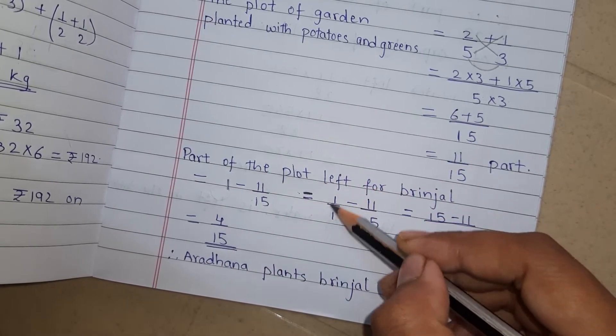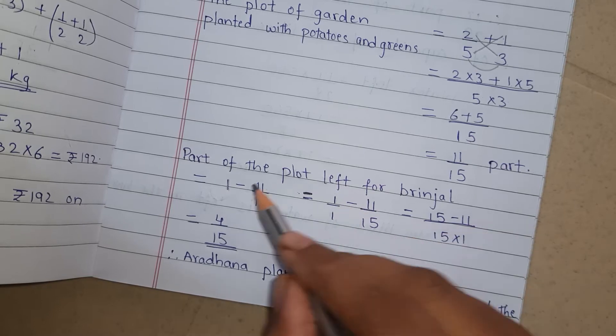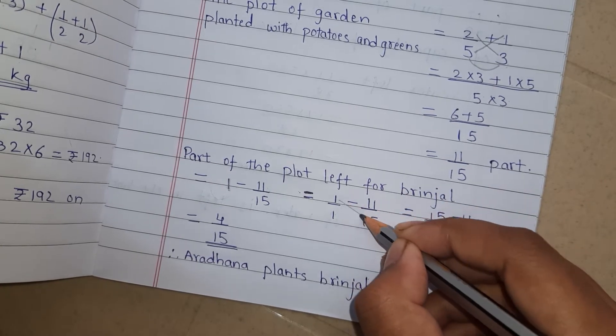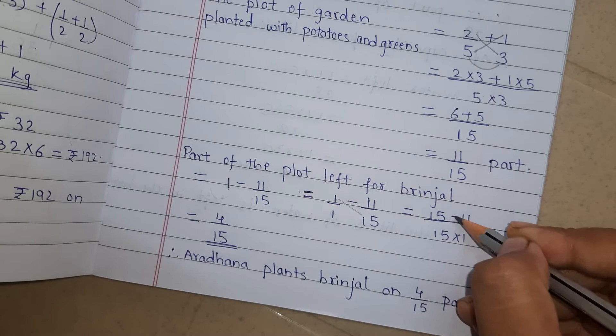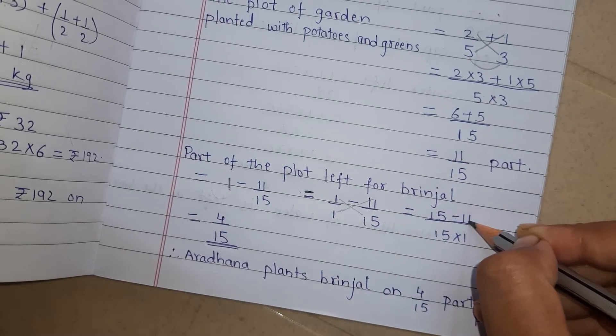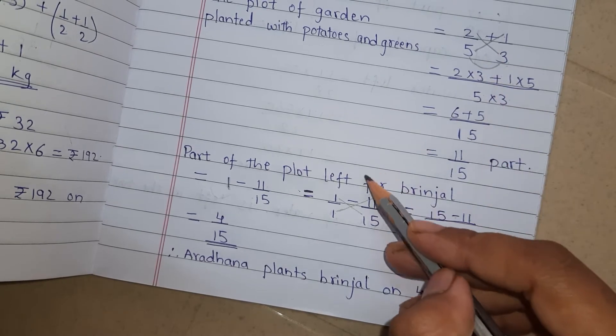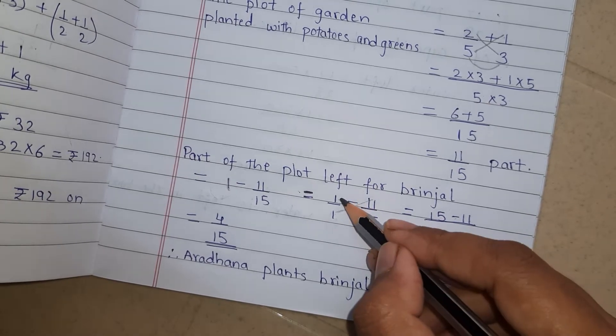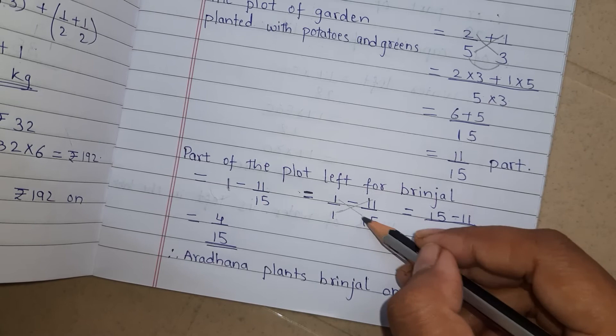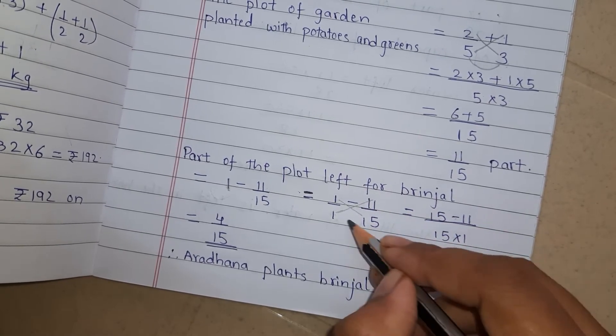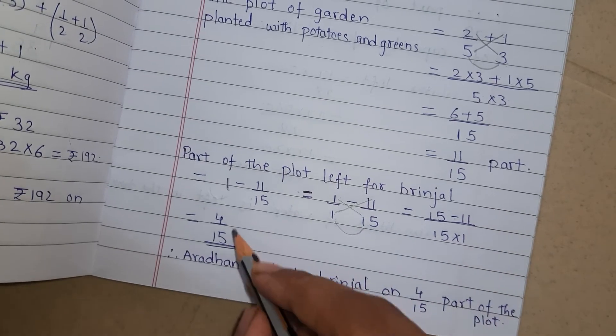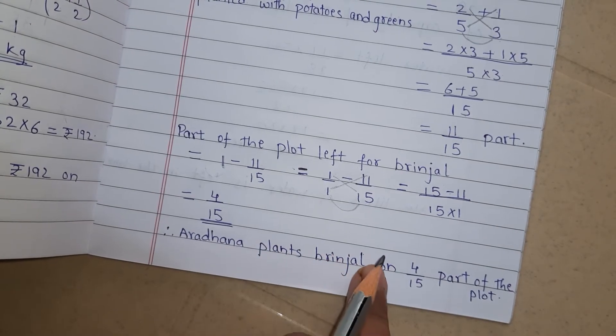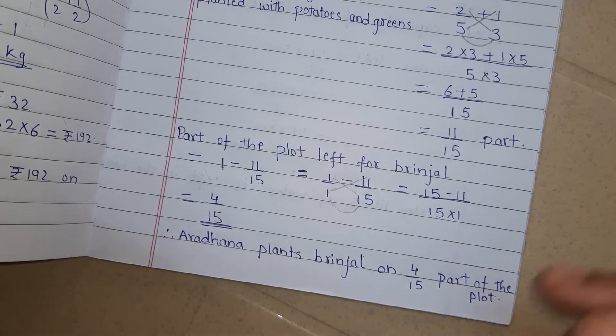So 1 minus 11/15. 1 can be written as 1/1 because 1/1 is 1 only. These both are same. Now cross multiplication. 15 once are 15 minus sign. 11 once are 11. And this multiplication we are doing orally because it is multiplication with 1. So 15 once are 15, 11 once are 11. Upon 15 into 1. So the answer is 4/15. So Aradhana plants brinjal on 4/15 part of the plot of the garden. Okay.